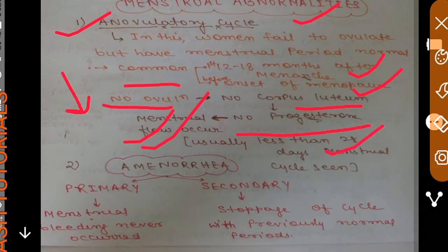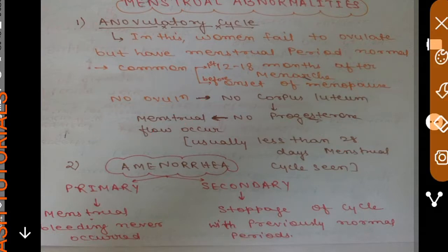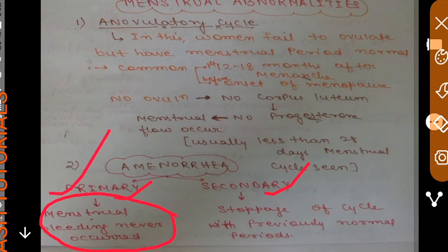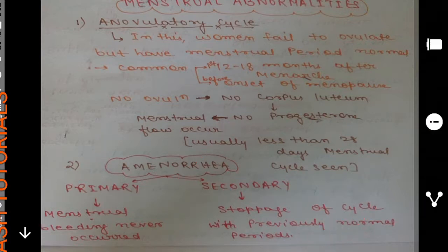Amenorrhea is basically of two types: primary amenorrhea and secondary amenorrhea. In primary amenorrhea, a woman has never had any menstrual bleeding at all. In secondary amenorrhea, a woman was previously having normal menstrual cycles, but due to certain reasons the cycle has stopped for a certain period. A stoppage of the cycle with previously normal periods is known as secondary amenorrhea.